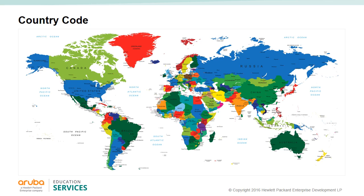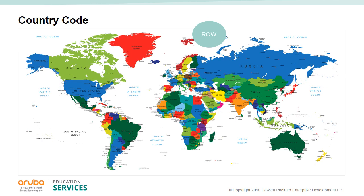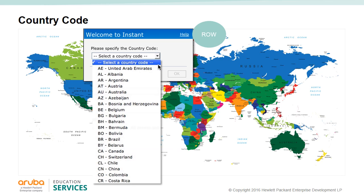Aruba Instant access points are shipped in four variants: IAPs destined for the US, IAPs destined for Japan, IAPs for Israel, and IAPs for the rest of the world. Any IAP shipped to a US, Japanese, or Israeli address is preset to their country codes and cannot be changed. This is done to comply with the country's laws. The rest of the world IAPs are not preset and therefore must be configured. After you successfully log in to the Instant user interface, a country code box appears and you will need to select your country code to proceed. The country code box will not appear for US, Japanese, or Israeli IAPs.